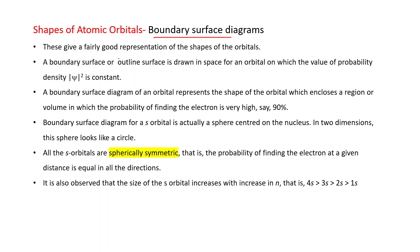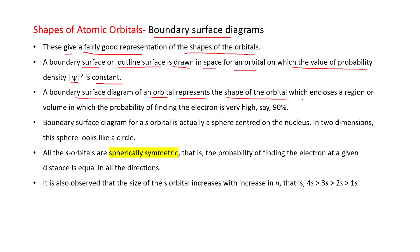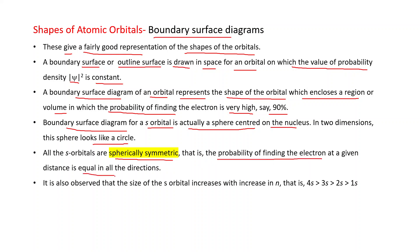A boundary surface diagram gives a fairly good representation of the shapes of the orbitals. A boundary surface is drawn in space for an orbital on which the value of probability density psi² is constant. It encloses a region where the probability of finding the electron is very high — about 90%. The boundary surface diagram for an s orbital is a sphere centered on the nucleus; in two dimensions it looks like a circle. All s orbitals are spherically symmetric.